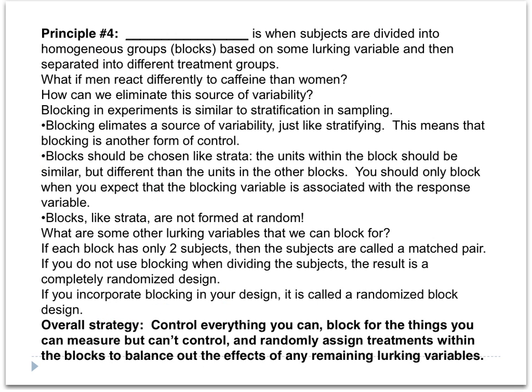The fourth principle is blocking. When you have a known variable you want to account for, you use blocking to address it. You divide subjects into groups first and then separate the treatment groups within those blocks. Blocking relates to experiments the same way stratifying relates to observations — you break them into groups first, then randomly select people from those groups. In the river problem, blocking by columns worked because plots close to the river had similar yields and plots far away were also similar to each other. Picking one from each column brought our average very close to the true population average.